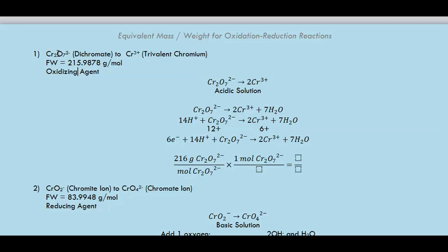Dichromate is an oxidizing agent. To find its oxidation number: the charge is negative two, and oxygen's oxidation number prevails at negative two because it is more electronegative than chromium, a transition metal. We have two chromiums and seven oxygens. Computing, x is equal to positive six. So the oxidation number for chromium in dichromate is +6.